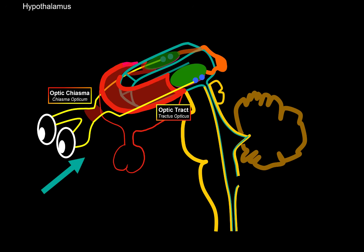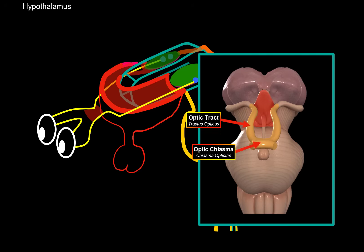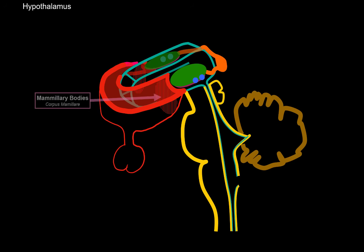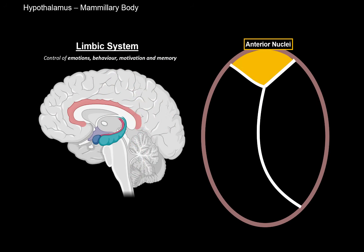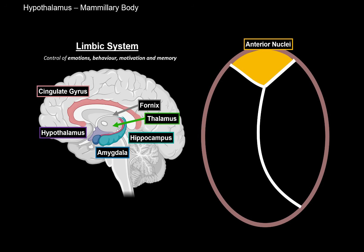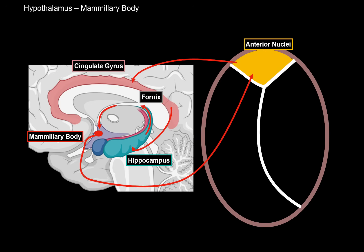The mammillary bodies are also part of the hypothalamus, responsible for emotional episodic memory and reflexes associated with olfaction. Recall the Papez circuit: the mammillary body sends axons to the anterior nuclei of the thalamus, which sends fibers to the cingulate gyrus, then to the hippocampal area, then through the fornix back to the mammillary body. This circuit is responsible for the emotional reaction to past memory.